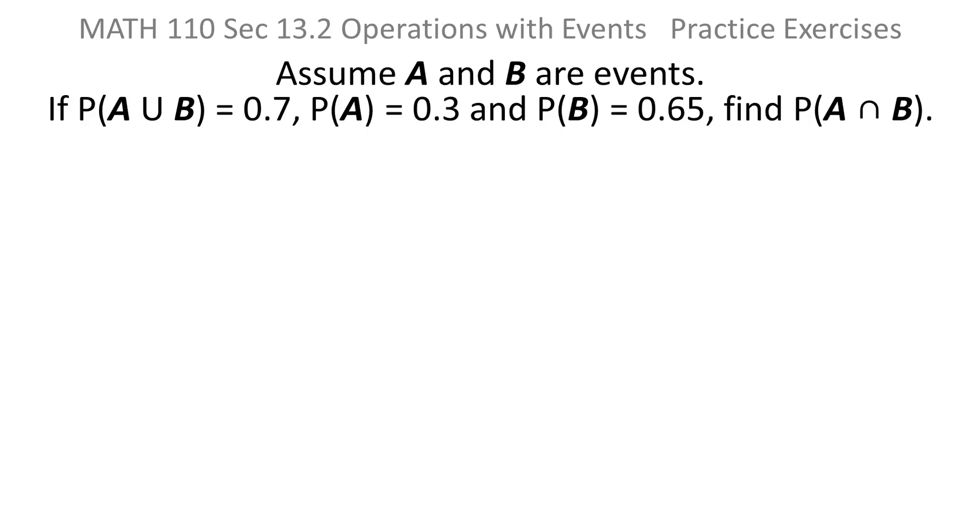Assume A and B are events. If the probability of A union B is 0.7, the probability of A is 0.3, the probability of B is 0.65, find the probability of A intersect B.